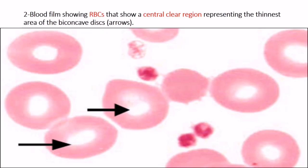Here is another blood film showing RBCs that display a central clear region representing the thinner area of the biconcave disc, marked by arrow.